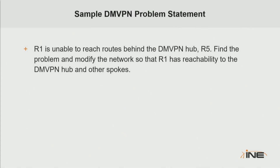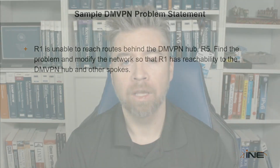We have a sample DMVPN problem statement: Router 1 is unable to reach routes behind the DMVPN hub, Router 5. Find the problem and modify the network so that Router 1 has reachability to the DMVPN hub and the other spokes. The questions are fairly vague, to not give away too many hints about what's going on in the topology, and it's up to us to dive deep with show commands, debugs, and packet captures to figure out what specifically is wrong, find the resolution, and discuss the impact on the overall DMVPN design.